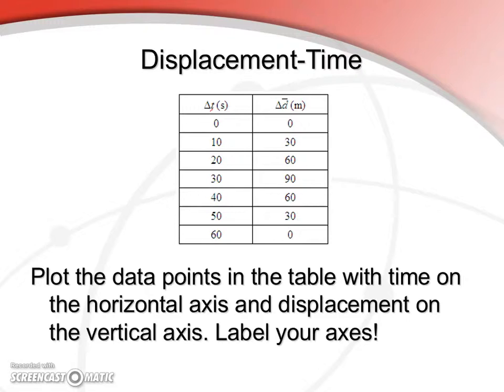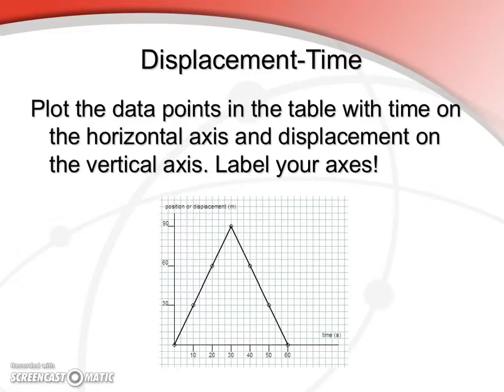So let's go ahead and plot the points in this table with time on the horizontal axis. So we're going to get a displacement-time graph. Go ahead and pause the movie, please, and do that now. Okay, so this is what we should look like. We've got a pretty simple triangle where the displacement increases as we move away from origin. And then when we turn around and come back, the displacement decreases back down to zero.